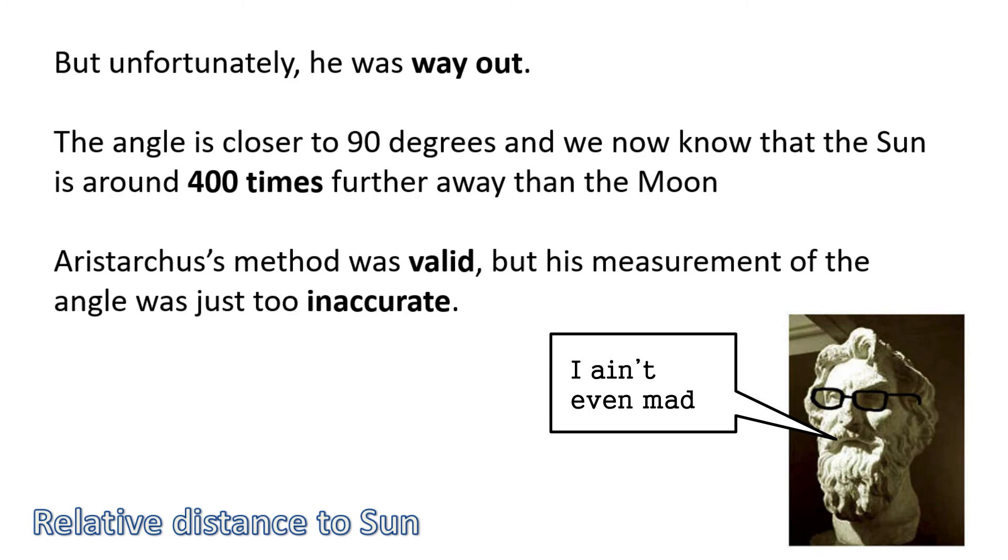So his method was valid but the measurement was inaccurate. This is a good idea to understand here - the idea of a valid experiment. His experiment was valid, everything was good, it was a good idea, it's just his measurement needed to be improved.